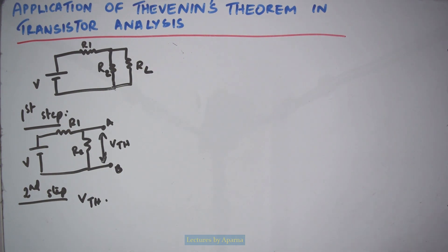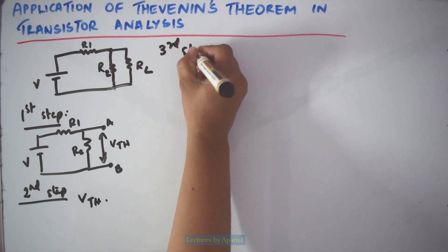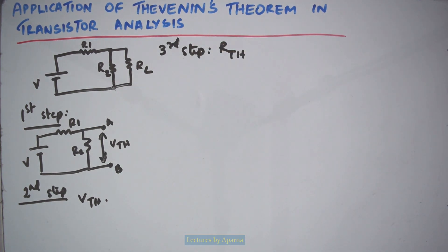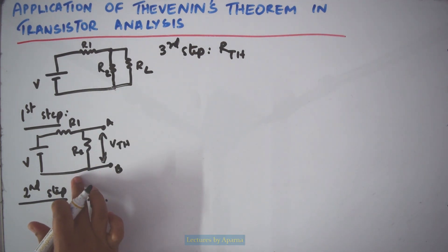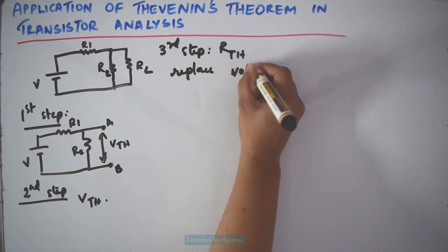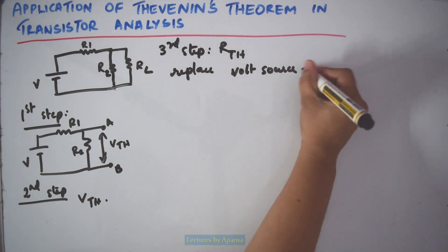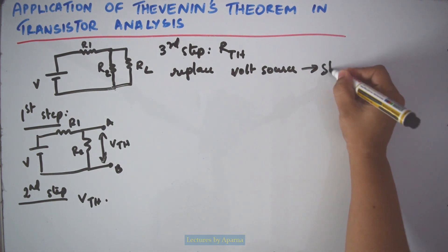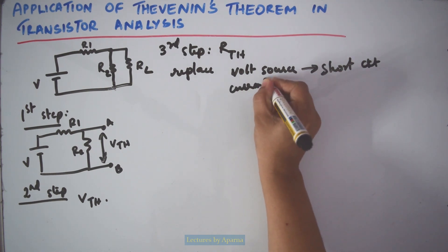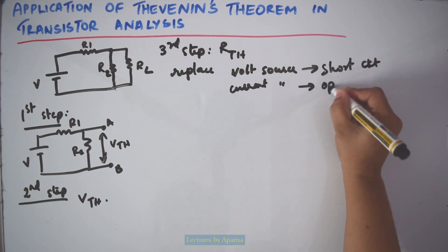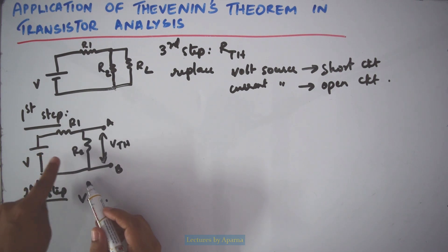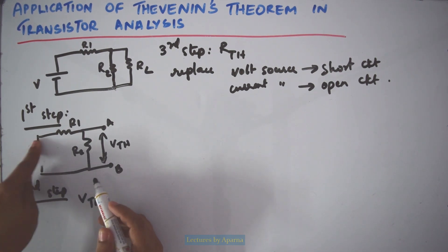The third step is to find RTH, the Thevenin's resistance. For that, in this circuit you have to replace voltage sources — a voltage source should be replaced by a short circuit. Or if there is a current source, it should be replaced by an open circuit. Here, since it is a voltage source, I will replace V with a short circuit.